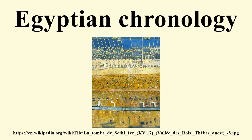For example, Breasted adds a ruler in the 20th dynasty that further research showed did not exist. Following Manetho, Breasted also believed all the dynasties were sequential, whereas it is now known that several existed at the same time. These revisions have resulted in a lowering of the conventional chronology by up to 400 years at the beginning of Dynasty the First.